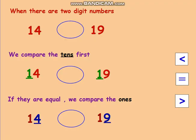Let's move forward. When there are two-digit numbers like 14 and 19, we have to compare the tens first. What's the number of tens in 14? It's one. What's the number of tens in 19? It's one. One ten in 14, one ten in 19 — because they are the same, we jump to the ones. There are four ones in 14 and nine ones in 19.